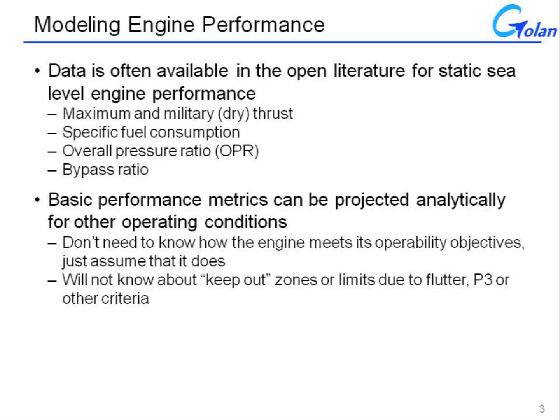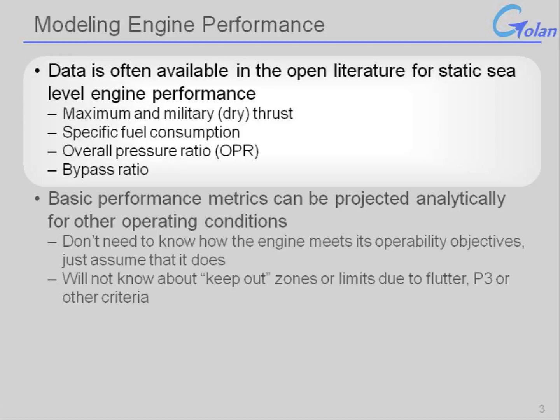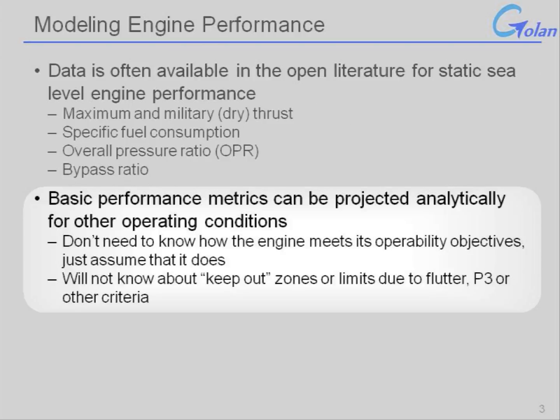Engine modeling is a central part of being able to perform a calculation for a mission profile or aircraft performance. Data is often available in the open literature for static sea level performance — things like maximum thrust, specific fuel consumption, overall pressure ratio, bypass ratio, and sometimes many other details as well. The other performance metrics can be projected analytically to other operating conditions once you have an engine model and you've calibrated it to the published, generally sea level static conditions.